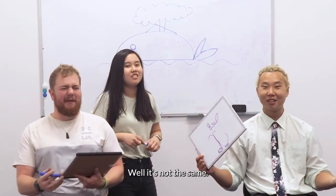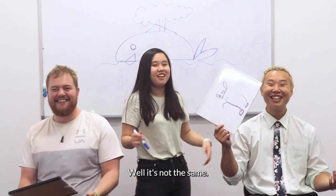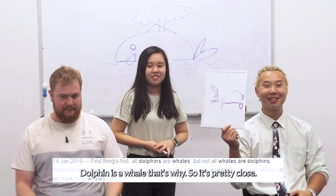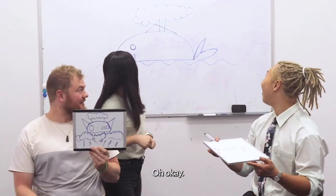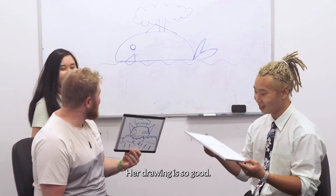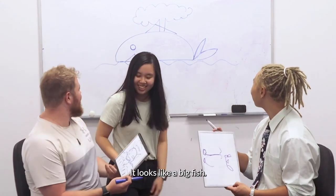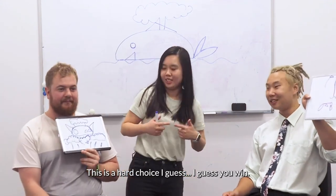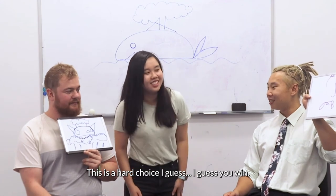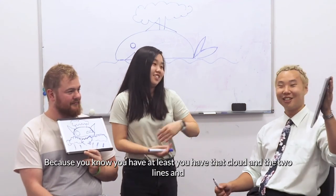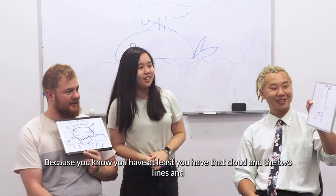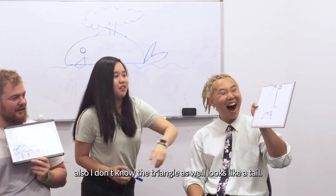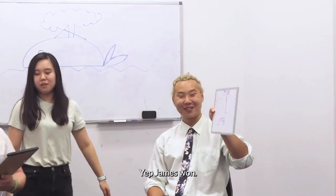Oh, I said dolphin. Well, it's not the same — because dolphin is a whale. That's why. So it's pretty close. The drawing looks really good — it looks like a big fish. Who wins? James won. That's right, first point.